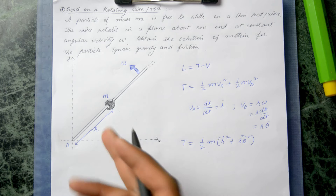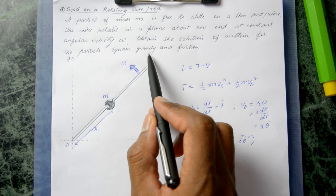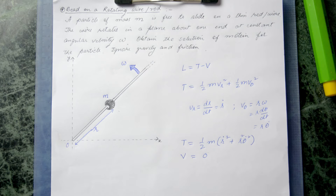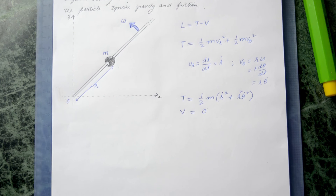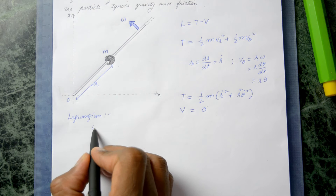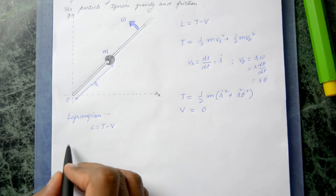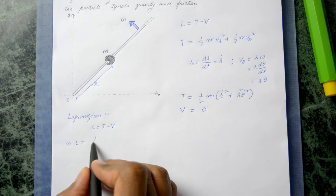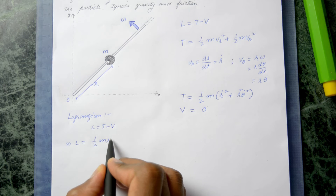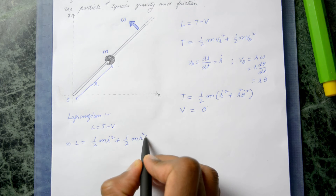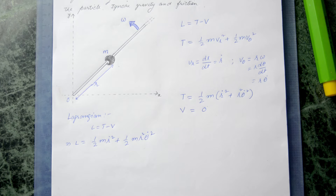Since the particle experiences neither gravity nor friction, the potential energy V = 0. Therefore the Lagrangian is simply L = T = one-half m·Ṙ² + one-half m·R²·θ̇².